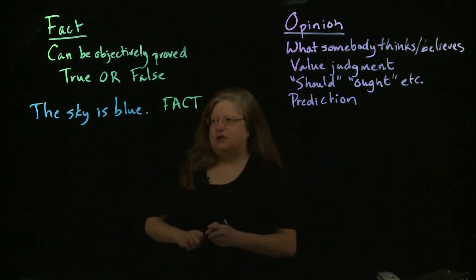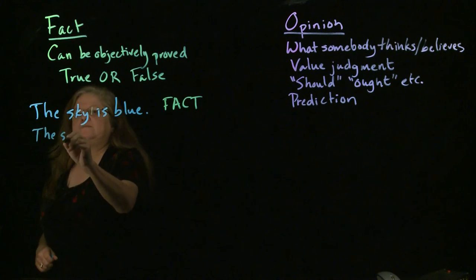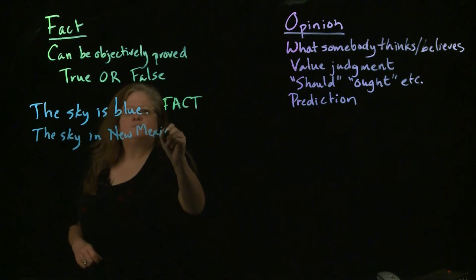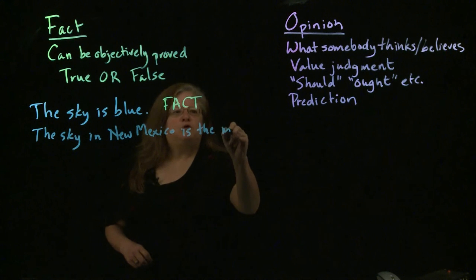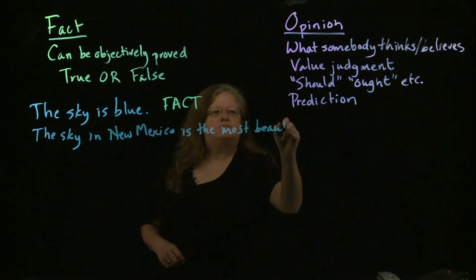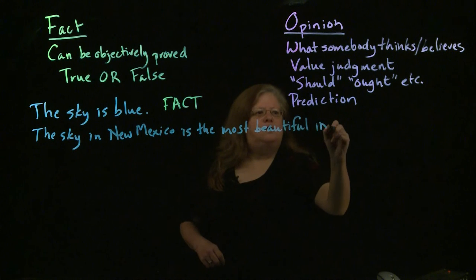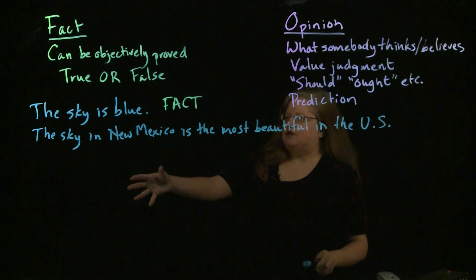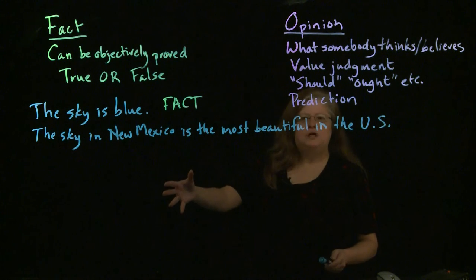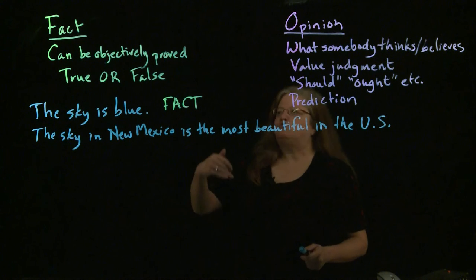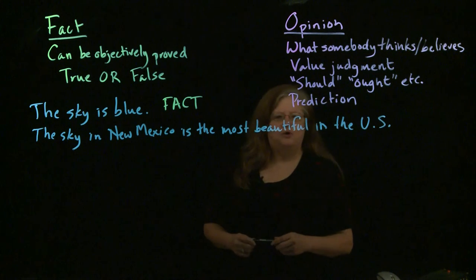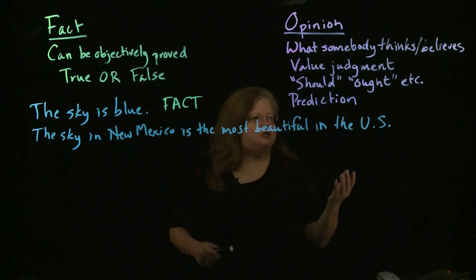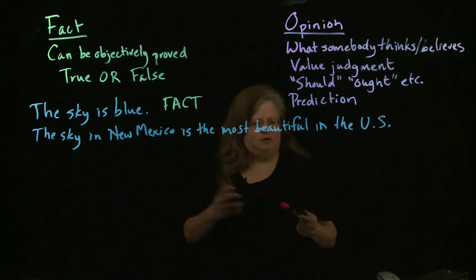On the other hand, we may have something like: 'The sky in New Mexico is the most beautiful in the US.' This is not something you can objectively test and prove. Probably residents of a lot of other states would claim their sky is the most beautiful — you even have Montana, which calls itself Big Sky Country. So this is something that's just an opinion; you can't go and objectively prove it.